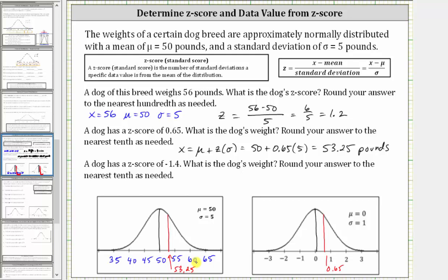For the last question: a dog has a z-score of negative 1.4 — what is the dog's weight? A z-score of negative 1.4 is shown here on the standard normal distribution, which means the dog's weight is 1.4 standard deviations below the mean of 50 pounds. So the dog's weight x equals the mean (mu) plus the z-score times the standard deviation.